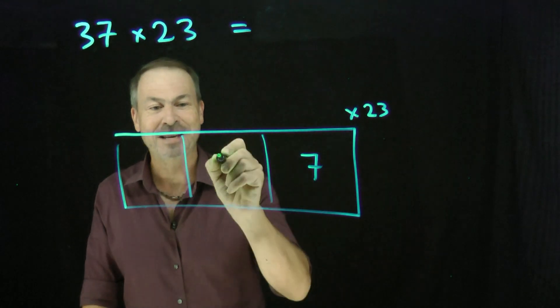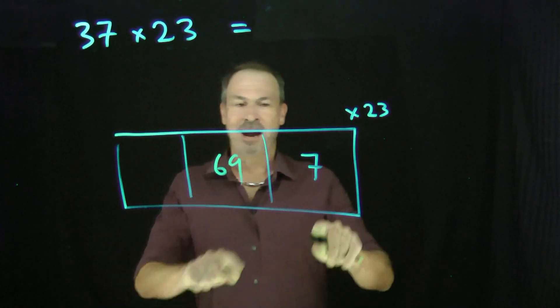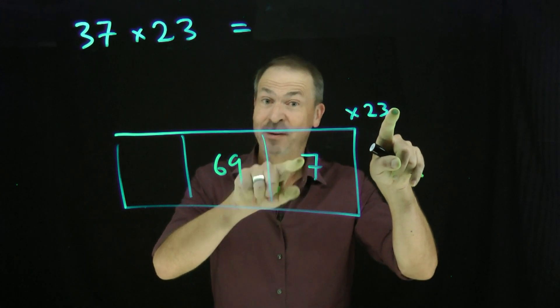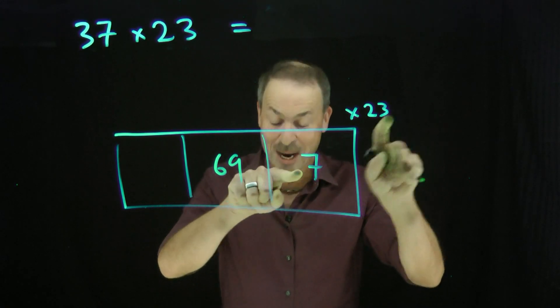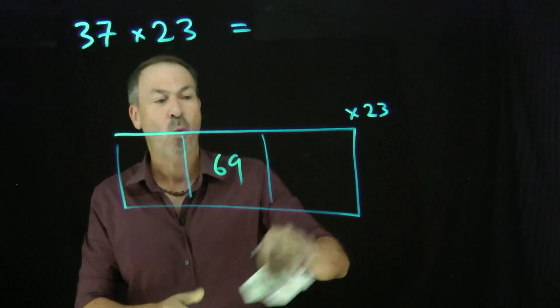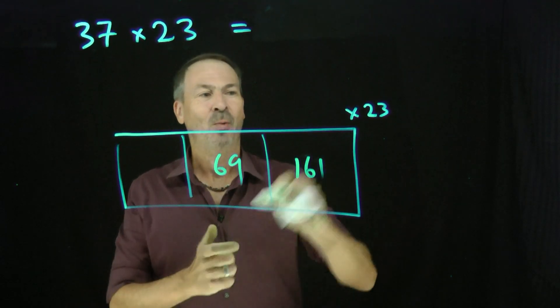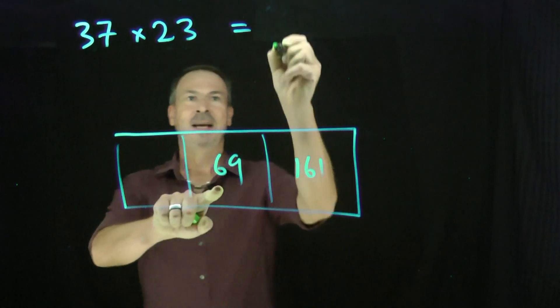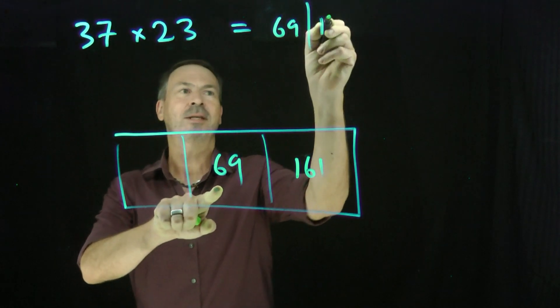So I'll now have 69 dots there. Alright, I've got 7 dots here right now. I want to go up by a factor of 23. For some reason, I have to know in my head that 7 times 23 is 161. So 7 dots will become 161 dots. Woah, there it is. There's the answer to 37 times 23.